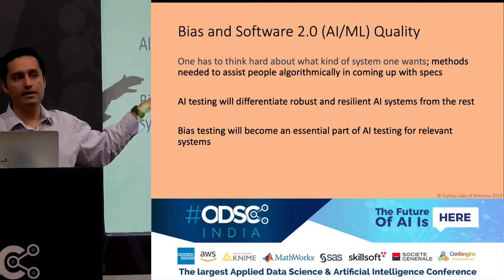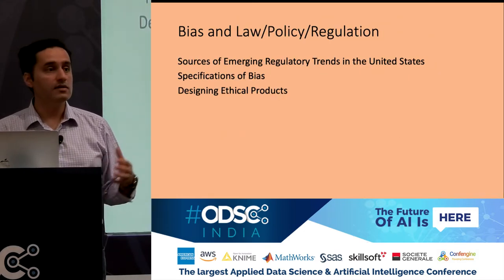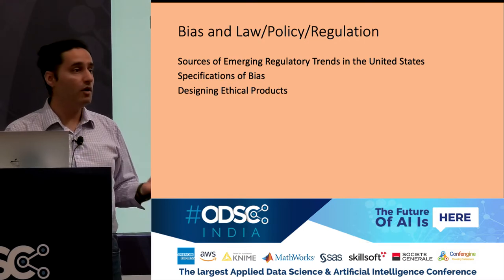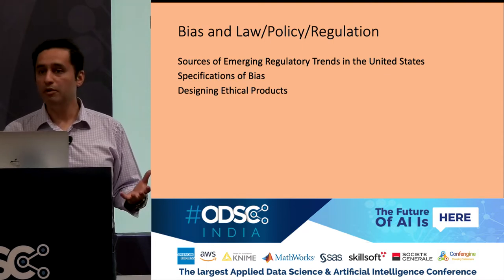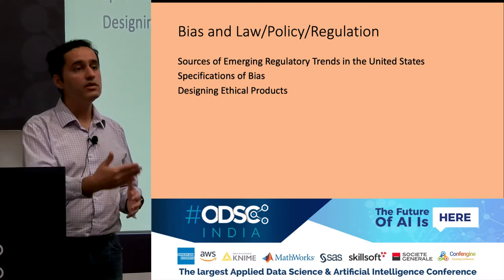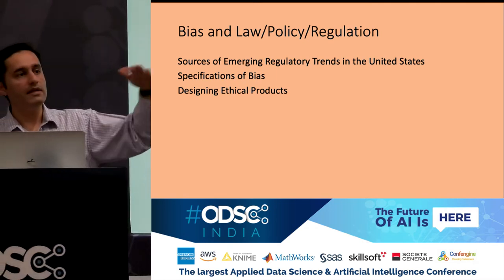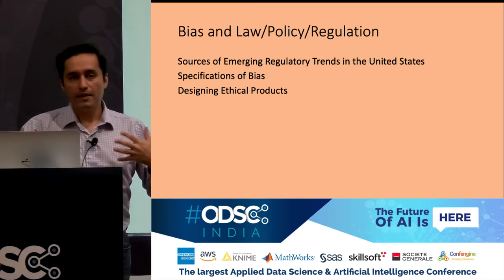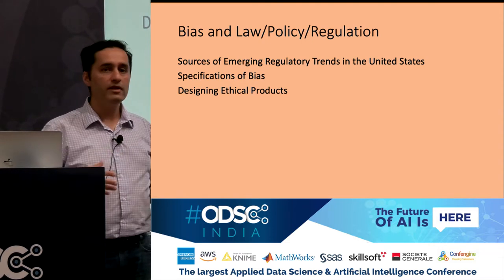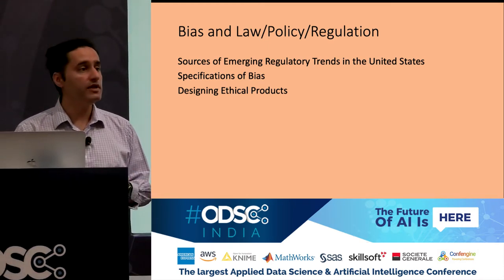One takeaway is you have to think about what kind of system you want. One place to look for guidance is what laws, policies, and regulations say — because these are not just guidance, they're requirements. Most of you build systems that are globally deployed, so awareness of where law, policy, and regulation already are — or are heading — in major international markets is essential to defining the specifications you want your AI system to meet. We'll talk about three categories: emerging regulatory trends, specifications of bias, and approaches emerging in designing ethical products.